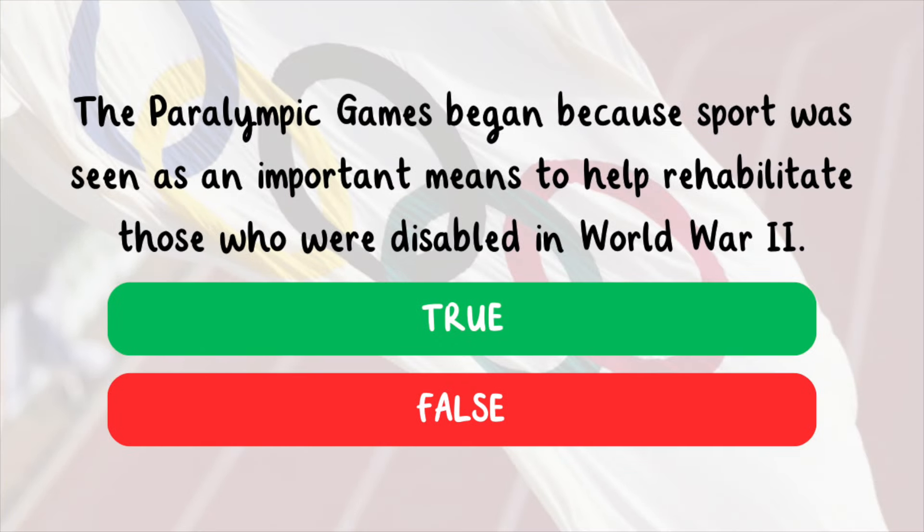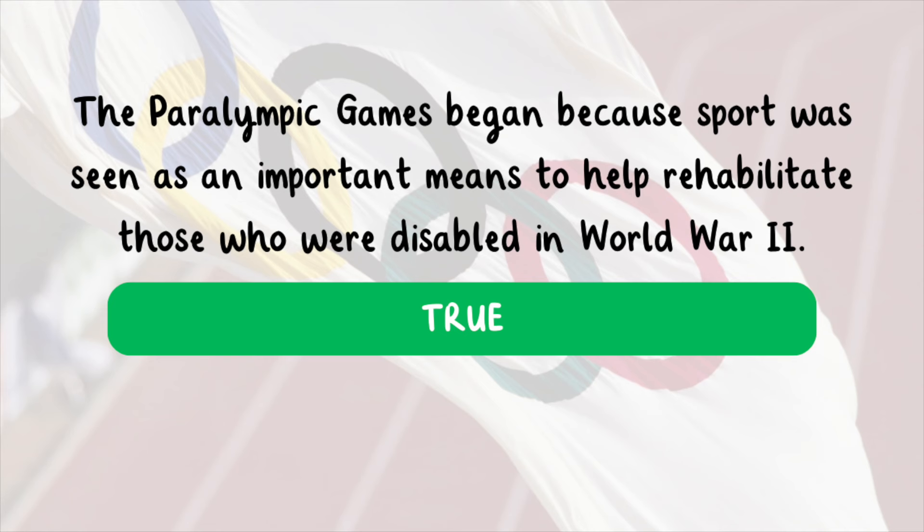True or false? The Paralympic Games began because sport was seen as an important means to help rehabilitate those who were disabled in World War II. This is true. It began as a wheelchair competition at a hospital, and then turned into a national event that attracted the attention of the Olympic Committee. The first Paralympic Games were held in 1960 in Rome.